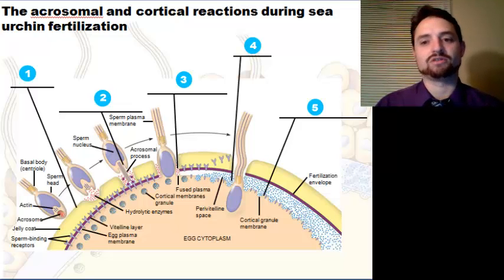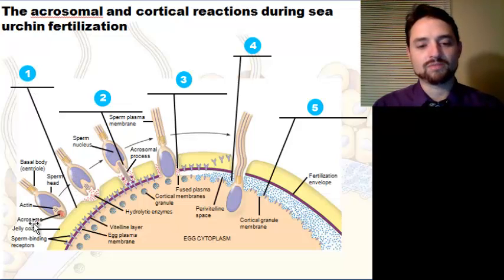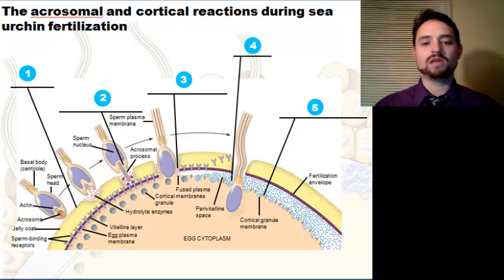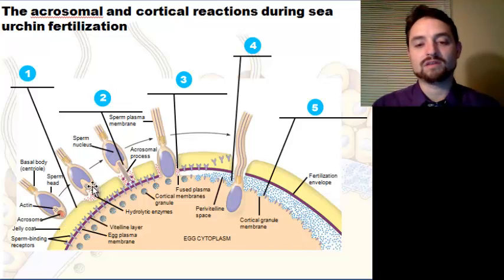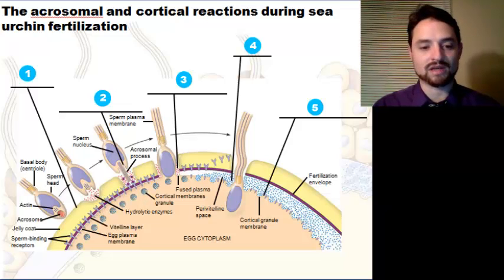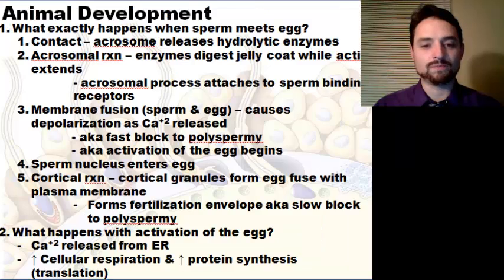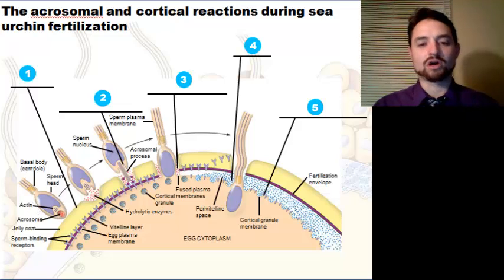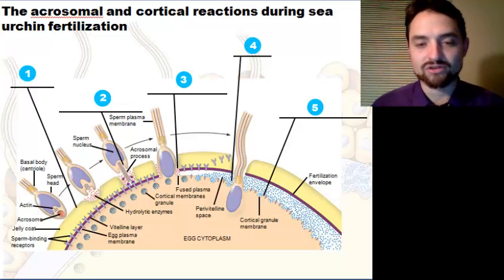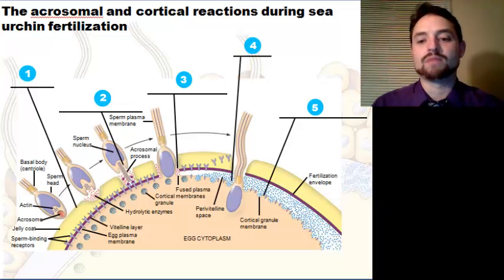Let's start with what exactly happens when sperm meets egg. Looking at sea urchin fertilization, there are five steps. The first is contact — the sperm makes contact with the egg's jelly coat, triggering exocytosis of the sperm's acrosomes. Step two is the acrosomal reaction: hydrolytic enzymes are released from the acrosome, making a hole in the jelly coat.